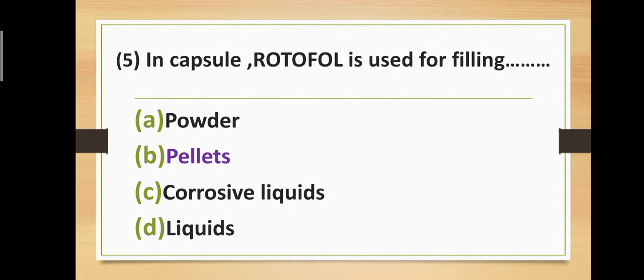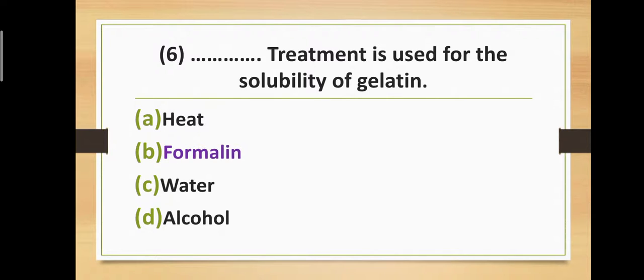Question number six: Dash dash treatment is used for the solubility of gelatin — Option A: heat. Option B: formalin. Option C: ether. Option D: alcohol. The correct answer is option B — formalin. Formalin treatment is used for the solubility of gelatin.